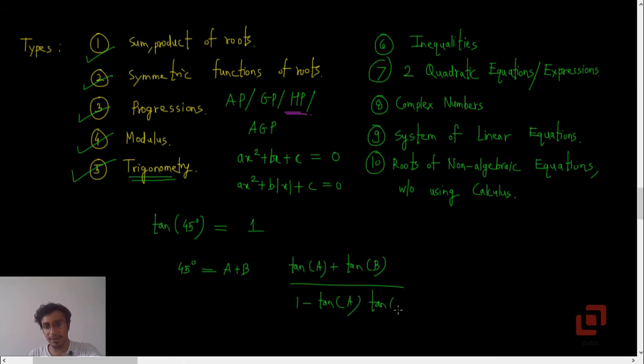tan of a into tan of b, so this is the product of the roots. If we have a quadratic equation whose sum is given and whose product is given, or vice versa, we can easily find the unknown quantity.